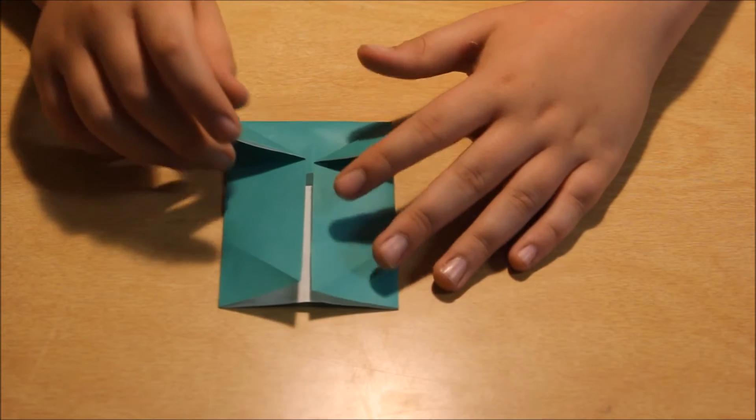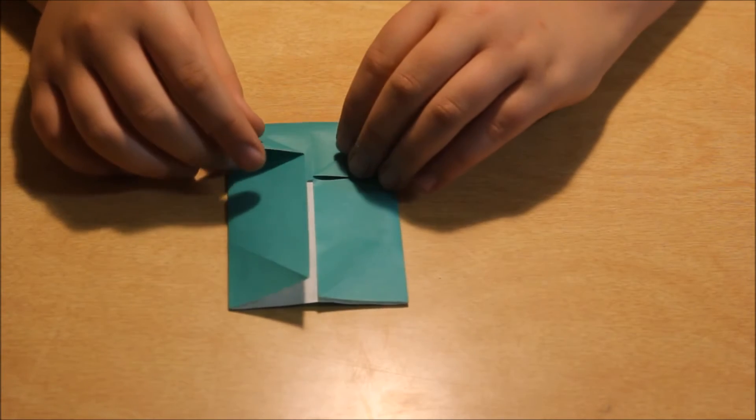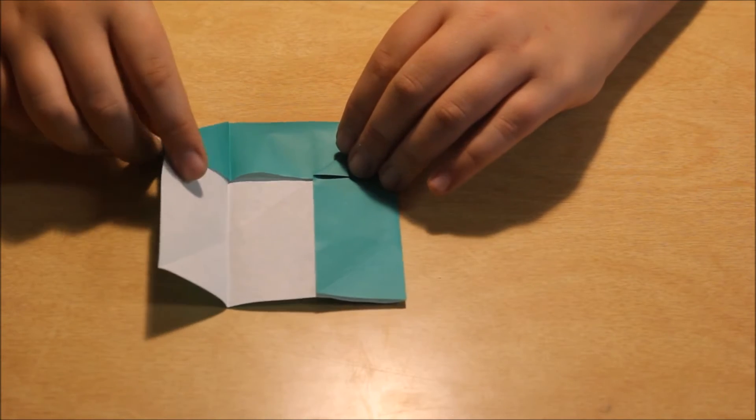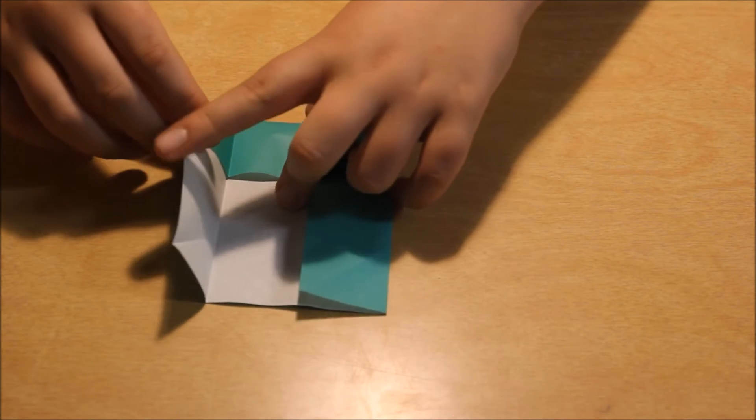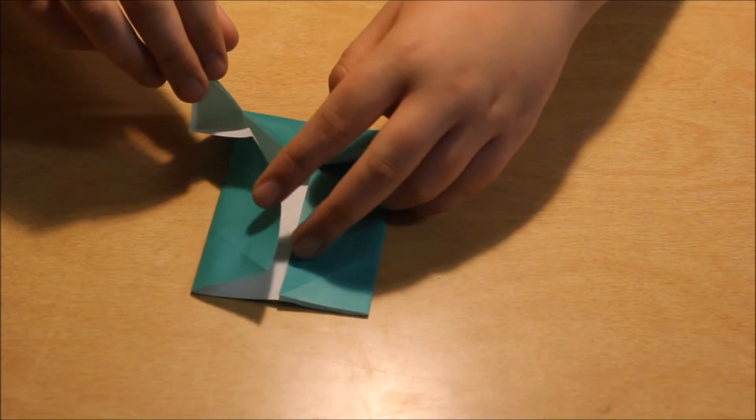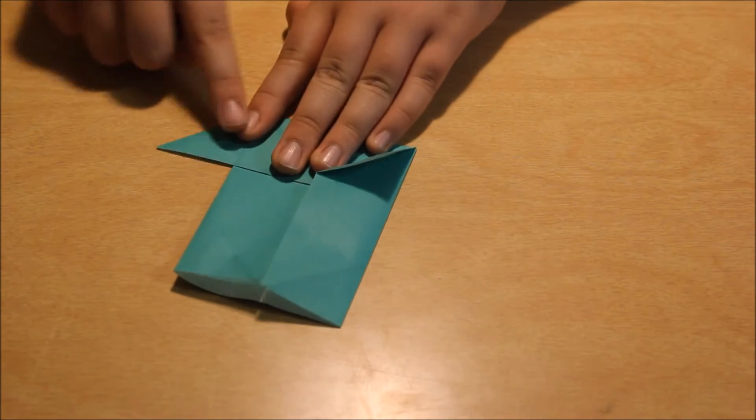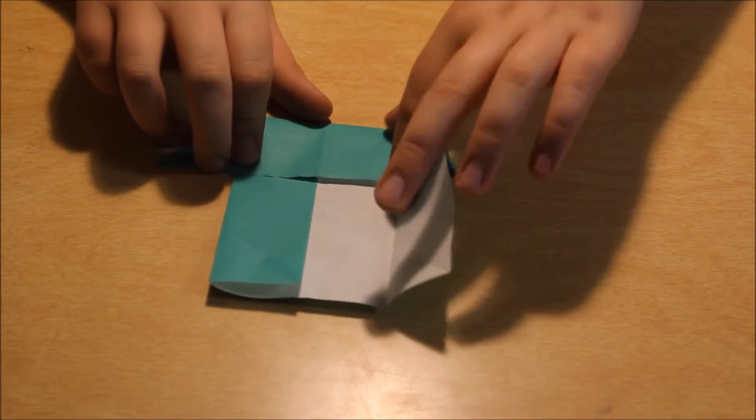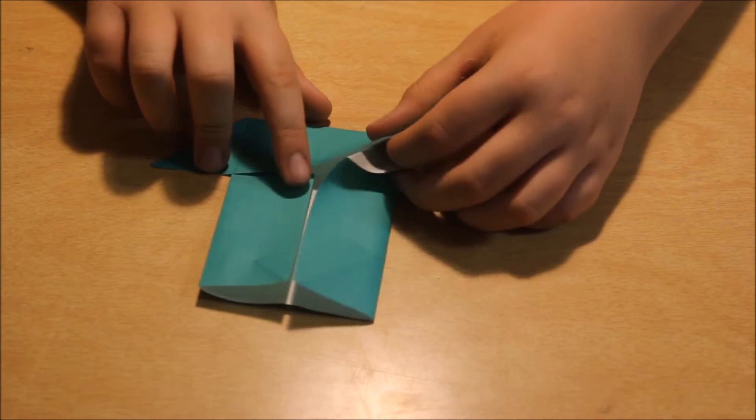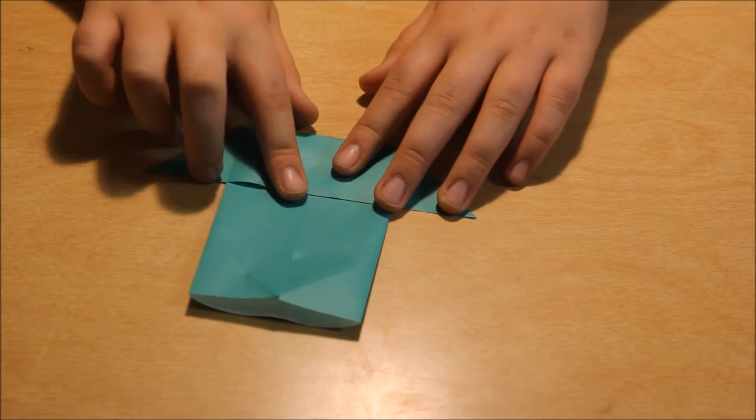Now here's the complicated fold. You're going to take this flap and you're going to pull it out and push that back in. And do the same on the other side. Just like that.